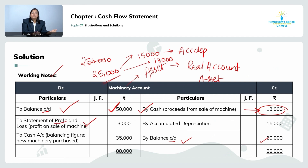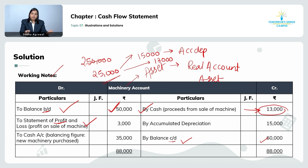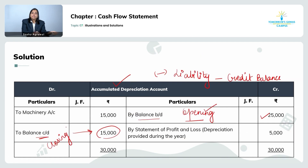Since it is a profit of 3,000, I will be crediting it to the statement of profit and loss — not 'profit and loss account' — because we are preparing cash flow for a company, and as per the Companies Act Schedule 3 format, we prepare a statement of profit and loss. The accumulated depreciation on the sold machine was 15,000.